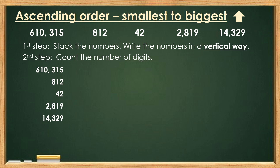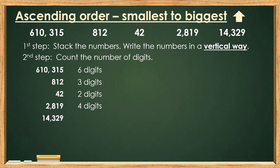Step number 2: Count the number of digits. The first number has 6 digits. The second number has 3 digits. The third number has only 2 digits. The fourth number has 4 digits. And the fifth number has 5 digits.